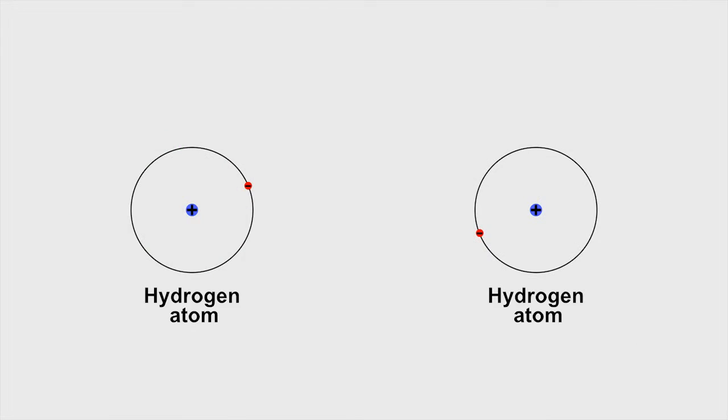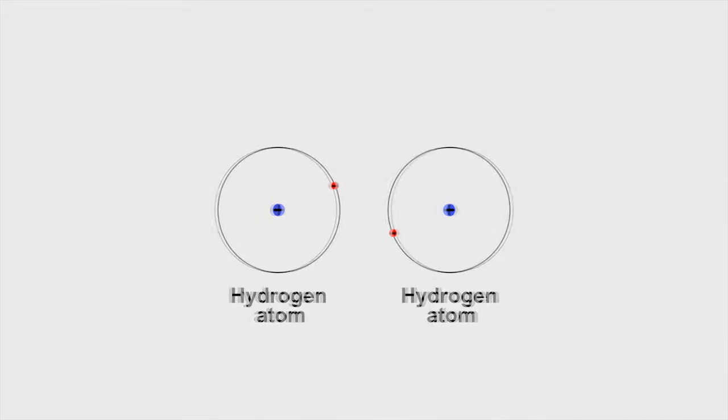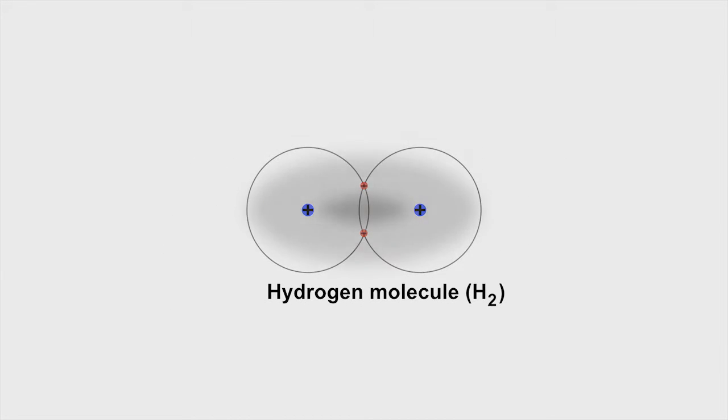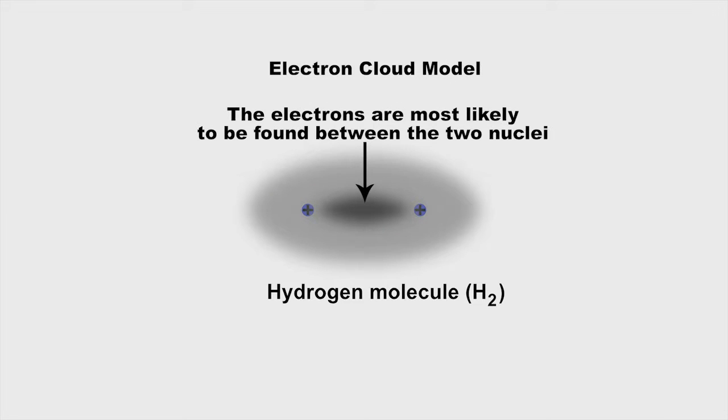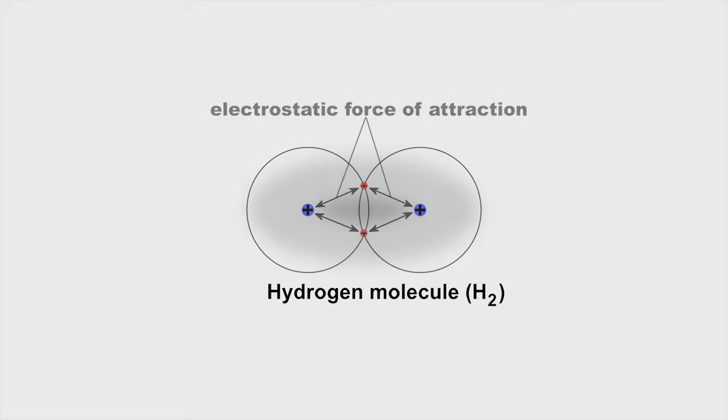In covalent compounds electrons are shared between the atoms bonded in there. By filling each outer shell you can achieve greater electronic stability.